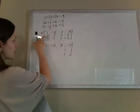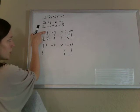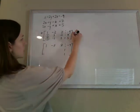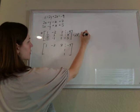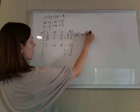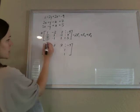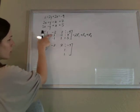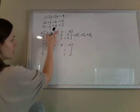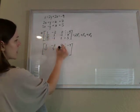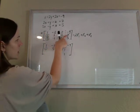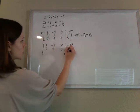To make this a zero, I'll do negative 2 times row 1 plus row 2. So negative 2 times row 1 plus row 2 to make my new row 2. So negative 2 plus 2 is 0. 4 plus 1 is 5. Negative 4 minus 1 is negative 5. 18 plus 7 is 25. Excellent.